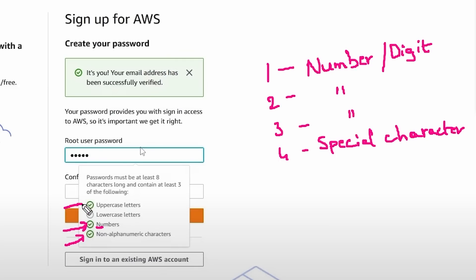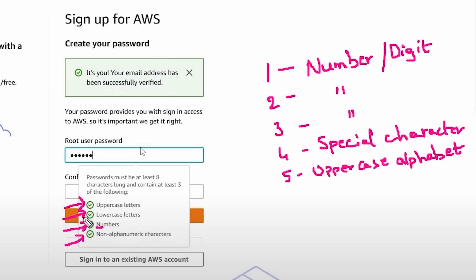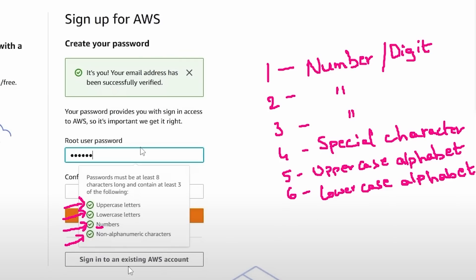That means the fourth character is a special character like at-sign, exclamation mark, dollar symbol, hashtag, etc. For the fifth character, it clearly indicates an uppercase letter. For the sixth character, the lowercase letter condition turns green, telling us the sixth character is a lowercase alphabet. From this point, all conditions are satisfied so we can't tell what the next character might be — but we do know the first six characters out of eleven total.